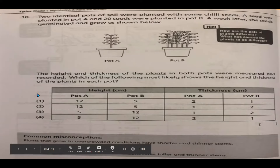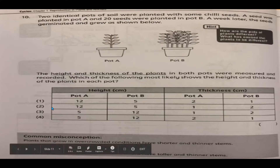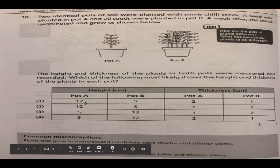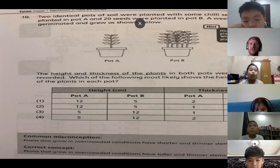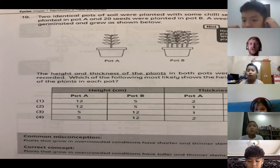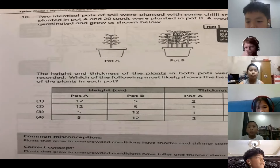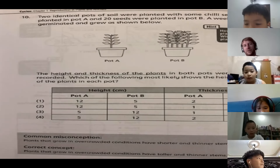The misconception is that when plants grow on their own, you think they'll get more nutrients and grow bigger and fatter — but no. Plants that grow in overcrowded places grow taller and thinner. Jasmine, why do you think that? It's because they have to grow tall to get more sunlight from the others, and they have to share nutrients from the ground, so they cannot grow thick.